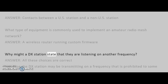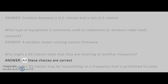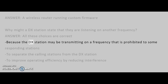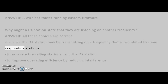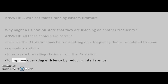Why might a DX station state that they are listening on another frequency? Answer: All these choices are correct — because the DX station may be transmitting on a frequency prohibited to some responding stations, to separate the calling stations from the DX station, and to improve operating efficiency by reducing interference.